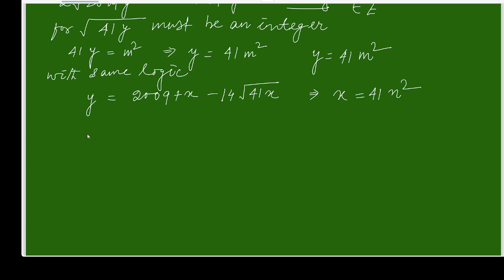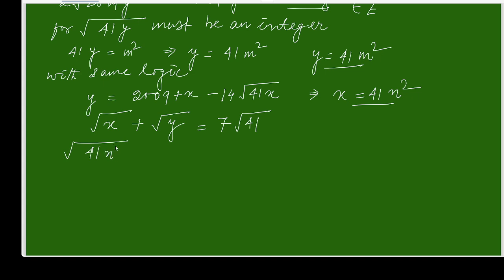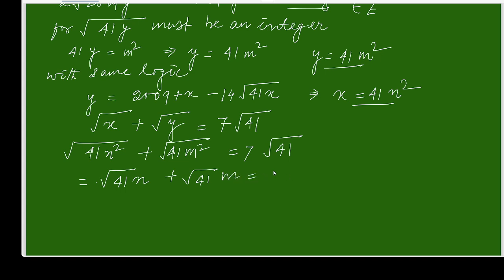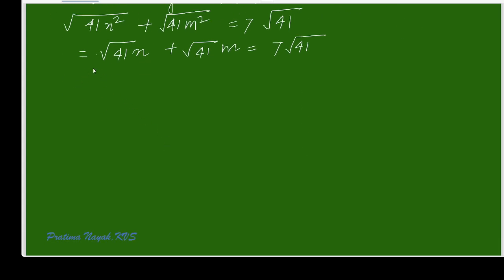Now let us substitute back into the original equation: square root of x plus square root of y equals square root of 2009, which is 7 root 41. Square root of x is square root of 41n squared which equals root 41 times n, and square root of y equals root 41 times m. So we get root 41 times n plus root 41 times m equals 7 root 41. Canceling square root of 41 throughout.